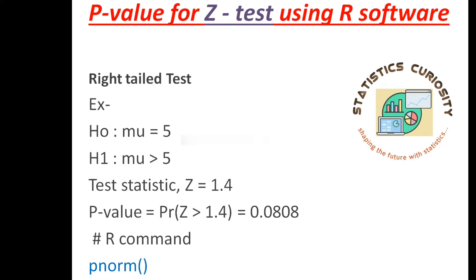For the right tail test example, we have the null hypothesis H0: μ = 5, and the alternative hypothesis H1: μ > 5. The right tail test is the test where the alternative hypothesis contains the greater than sign. Let's suppose the test statistic we obtain is z = 1.4. Then remember, the p-value is the probability of z greater than this test statistic value. Whatever the test statistic is, you have to find the probability of z greater than that value. This probability will be the p-value, obtained as 0.0808.